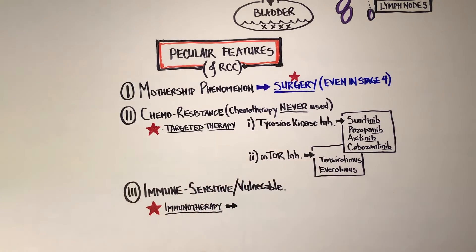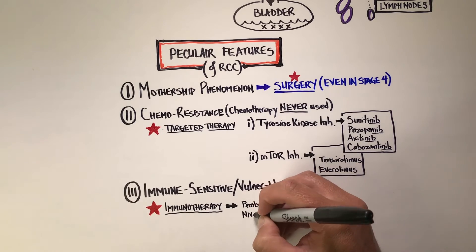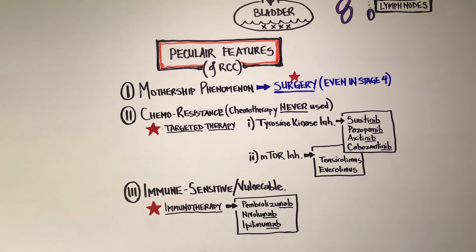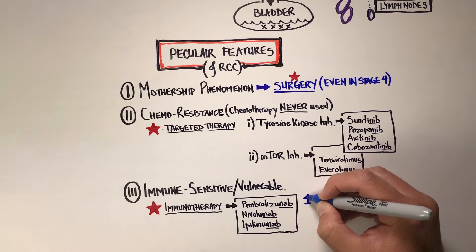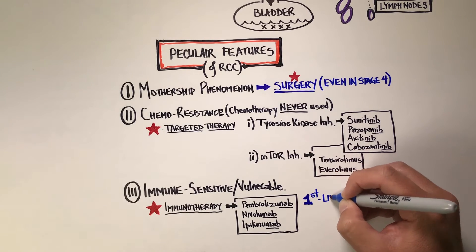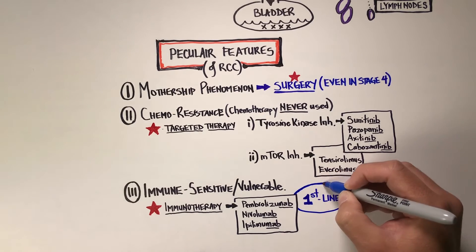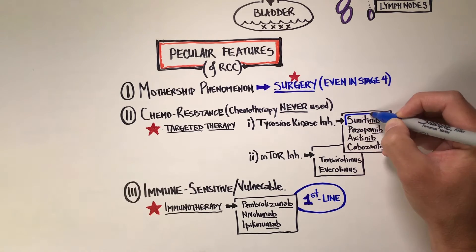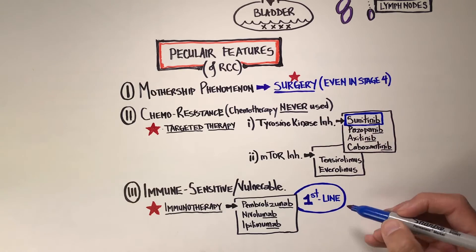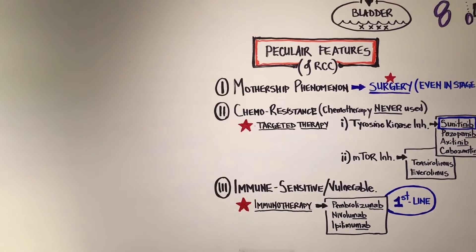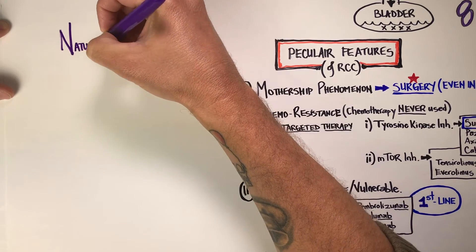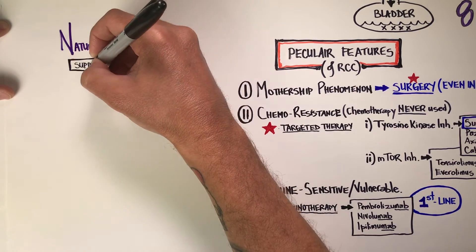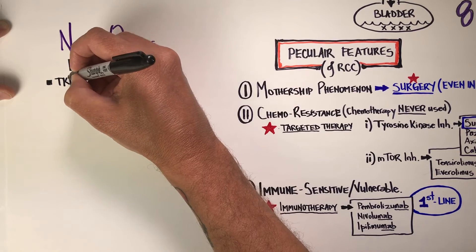The third unique feature is how sensitive renal cell carcinomas are to your own immune system. Immunotherapies are commonly used: pembrolizumab (Keytruda), nivolumab (Opdivo), and ipilimumab (Yervoy). These are now even more effective than targeted therapies and have been elevated to first-line therapy status. Immunotherapy is now offered upfront, replacing sunitinib, which was the first-line standard for about a decade.